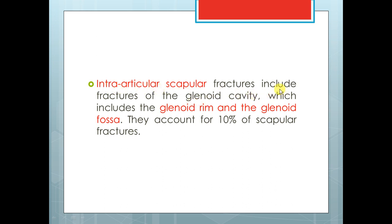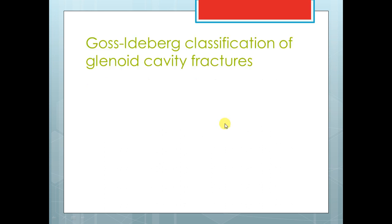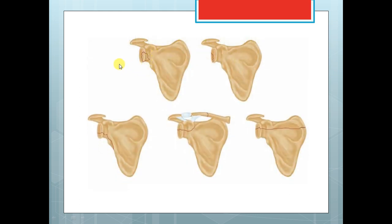Intraarticular fractures include the rim and fossa, representing only about 10%, classified by the Ideberg classification. Type 1 is a rim fracture, either anteriorly or posteriorly. Types 2, 3, and 4 are defined by where the fracture exits through the glenoid: if it exits inferiorly, this is Type 2; if it exits superiorly, this is Type 3; if it exits medially, this is Type 4.